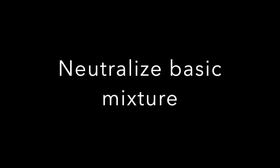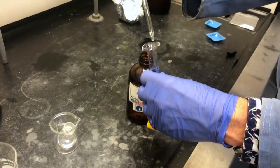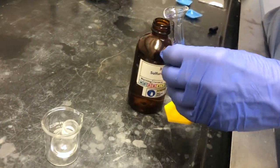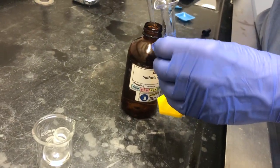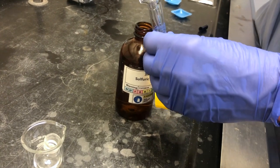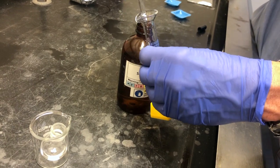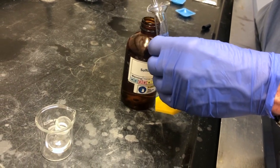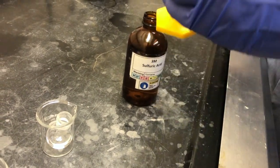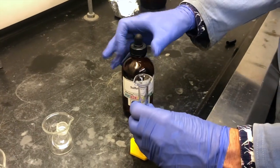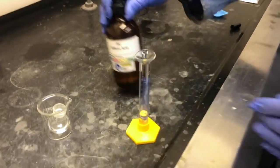At this point we were ready to neutralize this basic reaction mixture so three milliliters of sulfuric acid three molar were obtained. In order to keep track we placed this three molar sulfuric acid into a graduated cylinder but we ended up using all three milliliters.